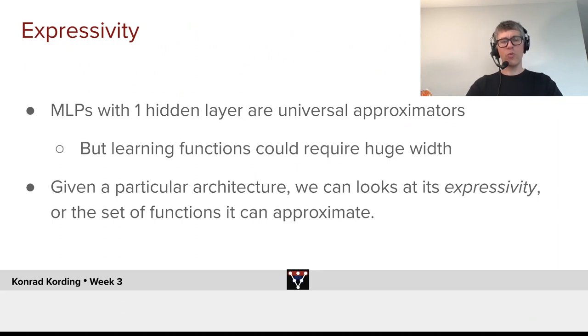The first way how it matters is in terms of expressivity. And we've encountered expressivity. We know that multilayer perceptrons with one hidden layer are universal approximators. But long functions could require huge width, as we discussed. Given a particular architecture, we can look at its expressivity, or the set of functions that it can approximate.